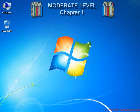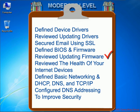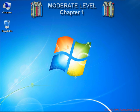That covers all the items for Chapter 1 of the moderate security level. To review: we covered what device drivers are and what they do, how to check current device driver versions, and how to update device drivers from the web. We've added SSL security to email, reviewed what BIOS does, how to check current BIOS levels on your PC, and how to update BIOS firmware from the internet. Then we talked about how to ensure your internet device is current — meaning your cable modem, DSL modem, or satellite box. We've reviewed basic networking including TCP/IP, DHCP, and DNS. And finally, we've configured your DNS addressing to improve security. Chapter 1 of the moderate security level is now behind us. Next up is moderate level Chapter 2!